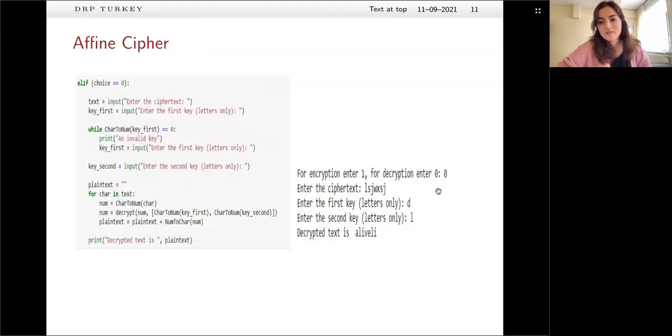So for decryption, we've entered zero and we have entered the cipher text, which is the same as the text you saw on the previous slide. And we entered the keys, D and L same keys, and we get the plain text that we have entered at the very beginning. So our algorithm just worked very well.